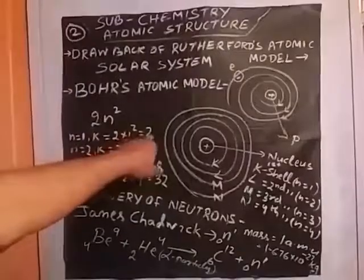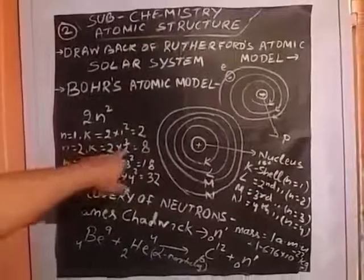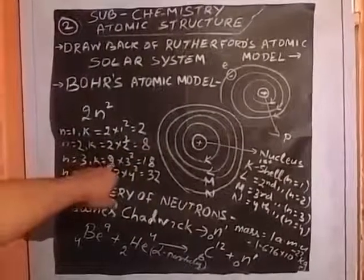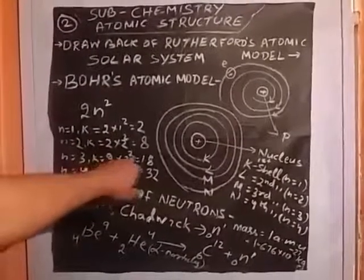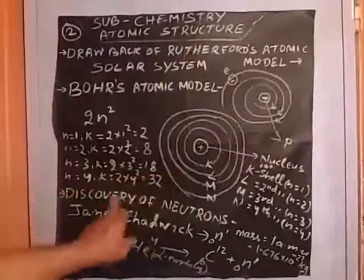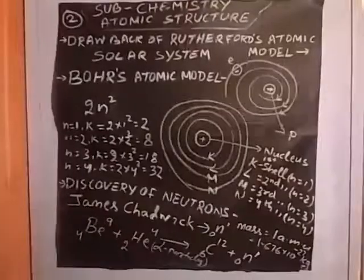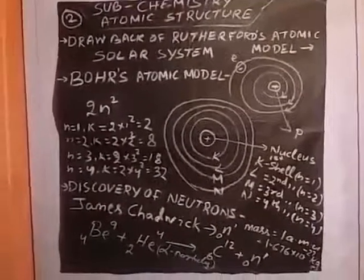If n=1, K shell contains 2×1²=2. If n=2, second shell K is 2×2²=8. If n=3, third shell K is 2×3²=18. Like this n=4, K is 32. Capacity of electrons according to their shells K, L, M, and N.